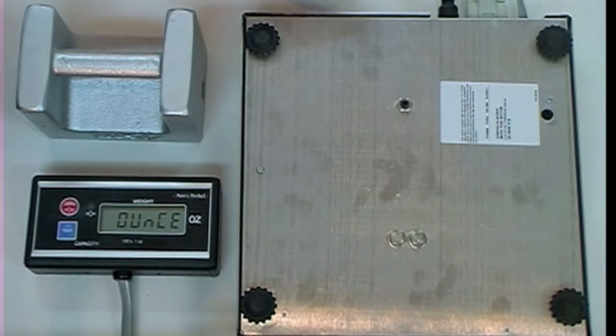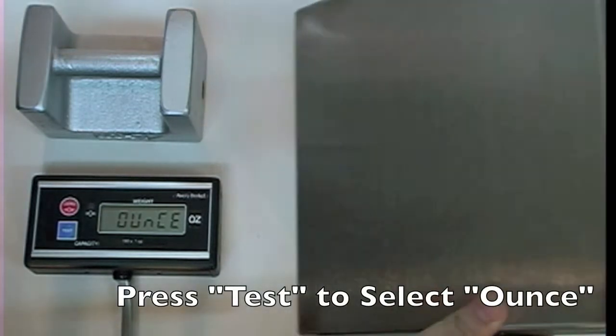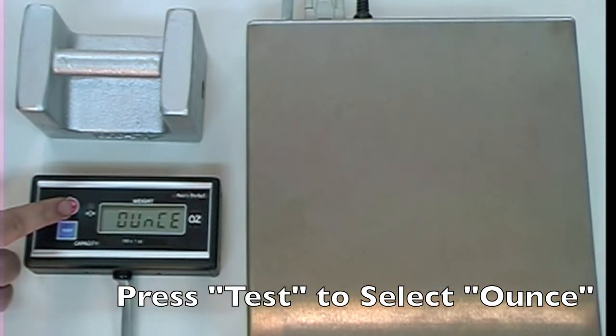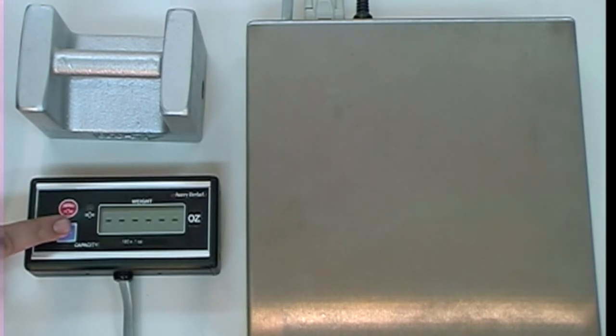We now need to choose the unit of measure we want to calibrate for. In this case, we need to choose OUNCE. Press the red zero button until OUNCE is displayed on the screen, then select it using the blue TEST button.